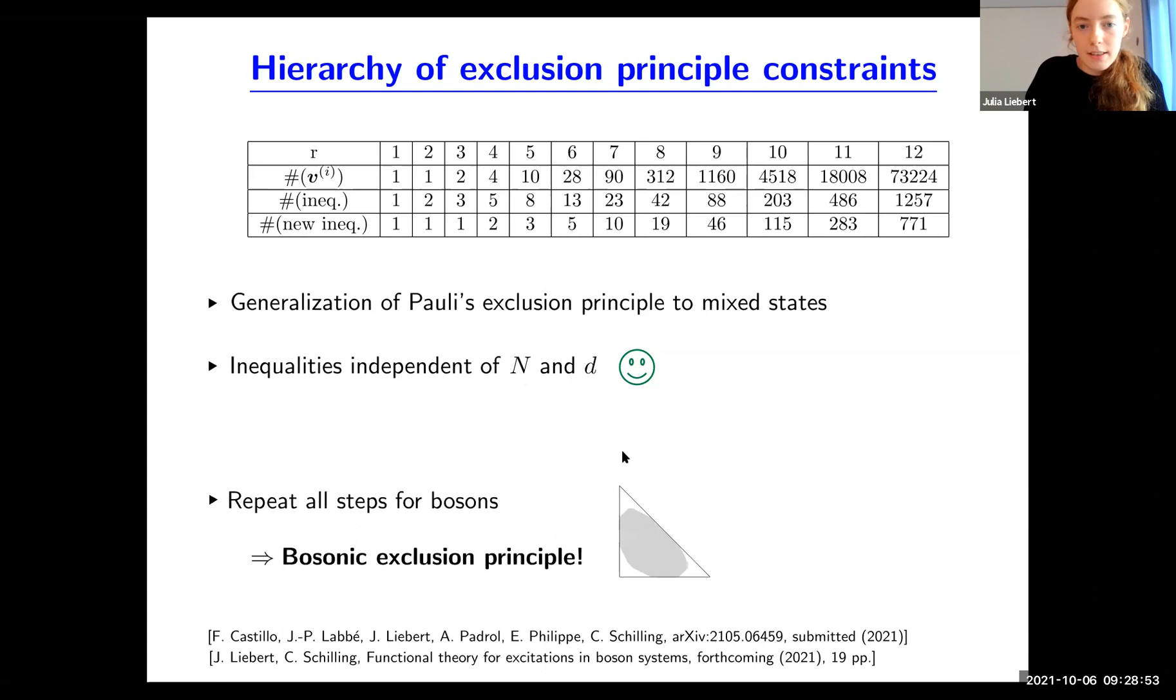To emphasize further, here's a table. On the first line we have r from one to twelve, then the number of vertices of the polytopes, the number of inequalities, and the number of new inequalities. For r equals four, we have the three inequalities from the previous slide plus two new inequalities. For r equals five, you have the five inequalities from r equals four plus three new ones. This is the hierarchy of generalized exclusion principle constraints. One important insight is that these inequalities are effectively independent of total particle number n and dimension of one-particle Hilbert space d. This is analogous to the Pauli exclusion principle, which tells you occupation numbers should be between zero and one independent of n and d, but in striking contrast to the generalized Pauli constraints studied by Klyachko, which depend strongly on n and d.